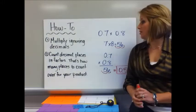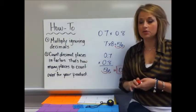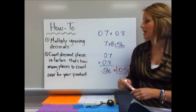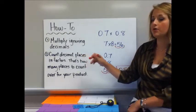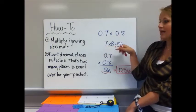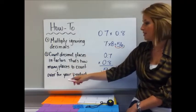For the how-to. First, you're going to multiply ignoring the decimals. This is very different from adding and subtracting because adding and subtracting decimals, it was very important to pay attention to the decimal. However, with multiplying, you multiply as if the decimals aren't there. So our example is 0.7 times 0.8. Well, 7 times 8 is 56.